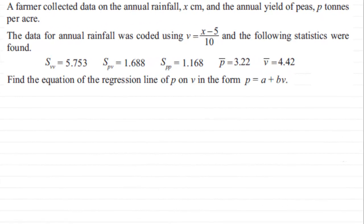What we have here is a question on working out the equation of a regression line. We've got a farmer who collected data on the annual rainfall of x centimeters and the annual yield of p tonnes per acre. The data for annual rainfall was coded using v equals x minus 5 all divided by 10.